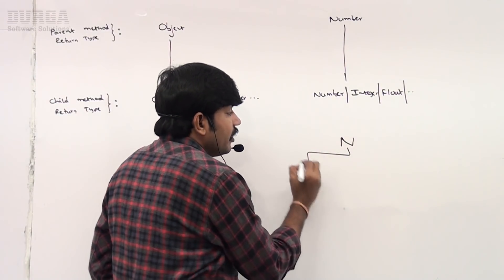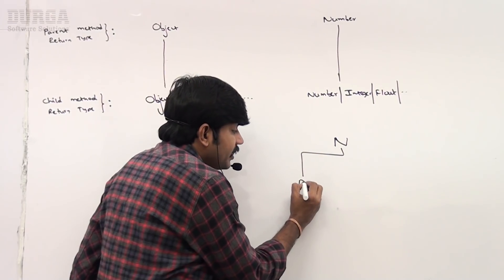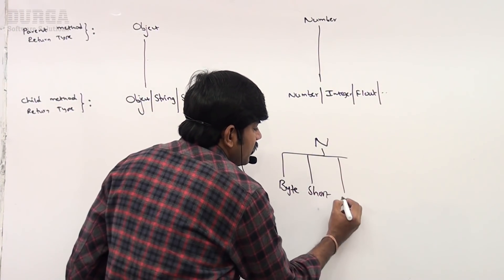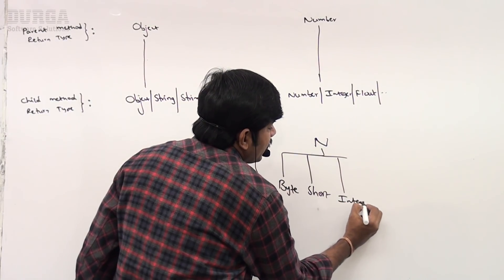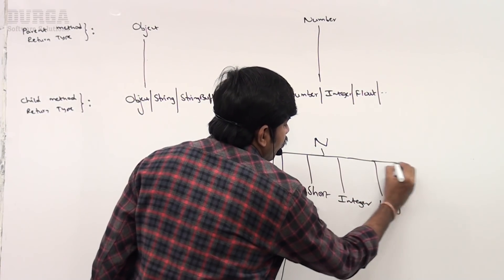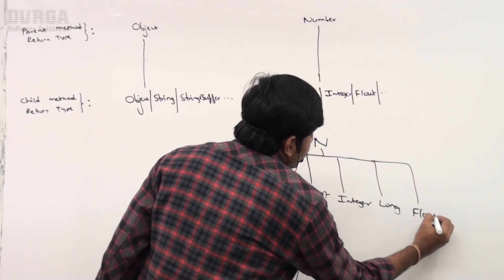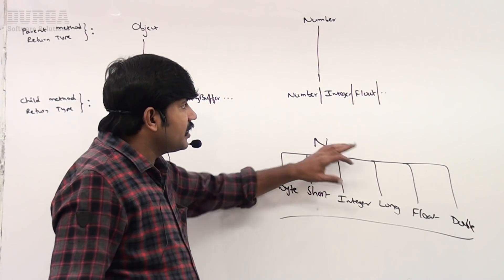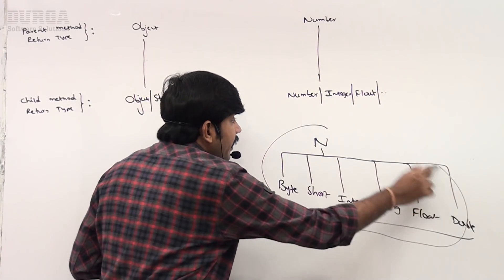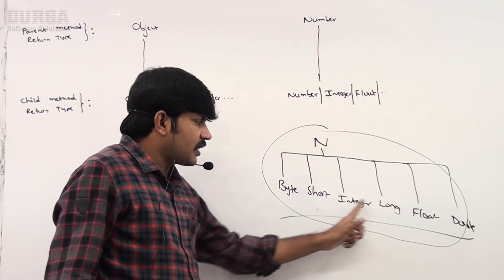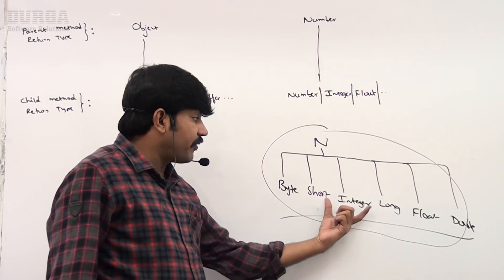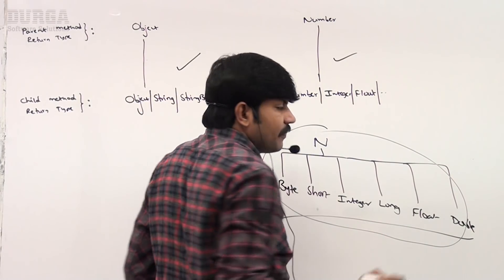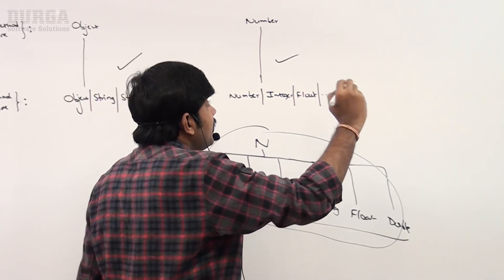Number's child classes include the wrapper classes: Byte, Short, Integer, Long, Float, Double — all these are valid child method return types when the parent return type is Number.